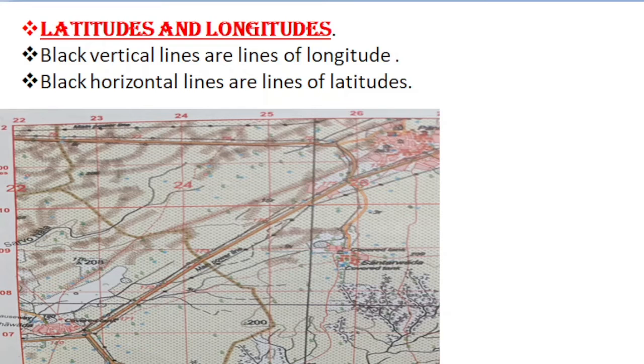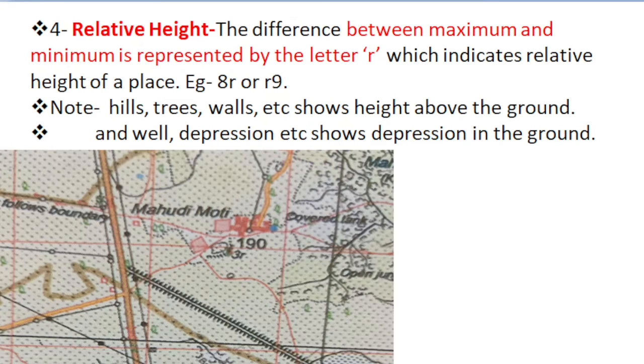Next is the relative height. Fourth is the relative height, and this is the most important height taken into consideration in topographical maps. This represents the difference between maximum and minimum and is represented by a letter r.